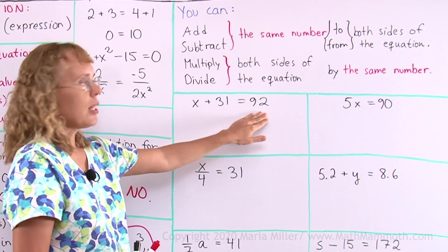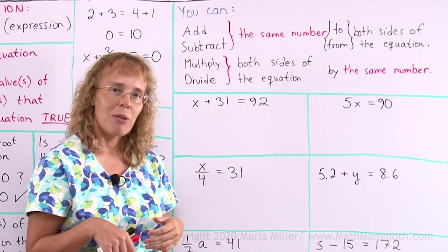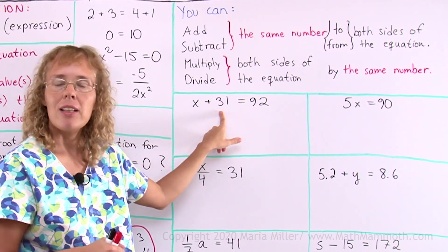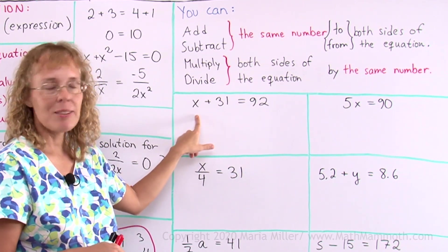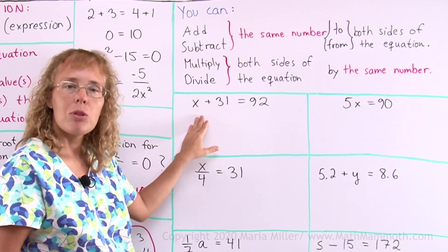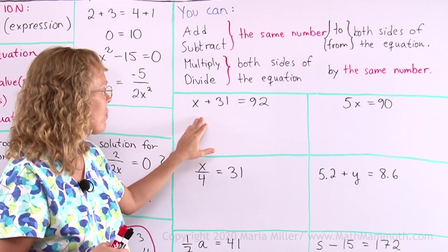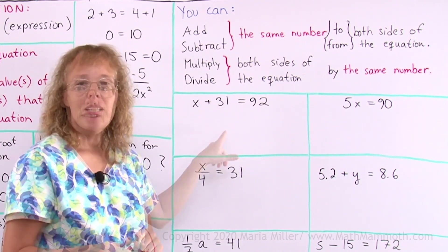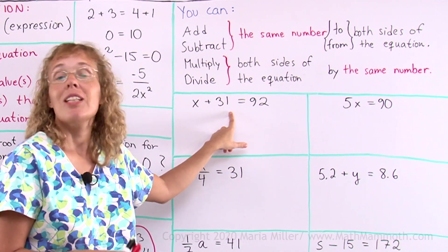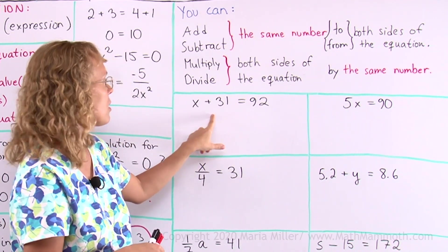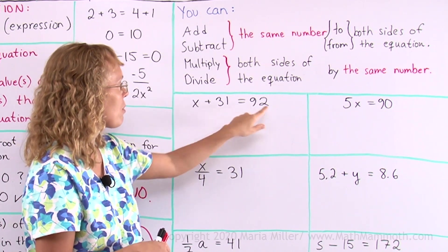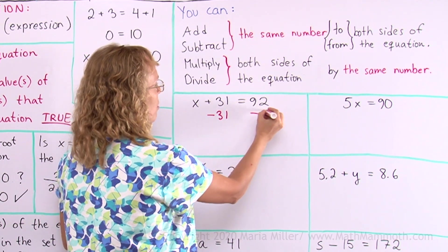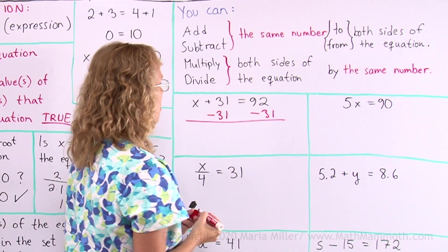So let's use those principles here with these simple equations. x plus 31 equals 92. The main idea we have here is that we want to have x alone on this side. We want to get rid of this number 31 on this side and then x would be alone. It's called isolating the variable. We want to isolate the variable on one side. Make it lonely, make it alone. So we need to get rid of 31. The way to get rid of this 31 is to subtract it. But we need to subtract the same number from both sides. I cannot just subtract 31 from here. I have to subtract 31 from both sides. So that's what I will do. I'll mark it here now. I'll subtract 31 from this side and from this side.